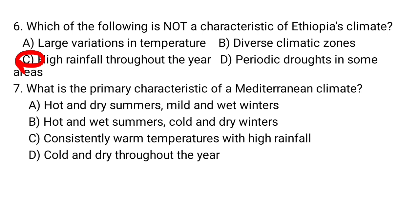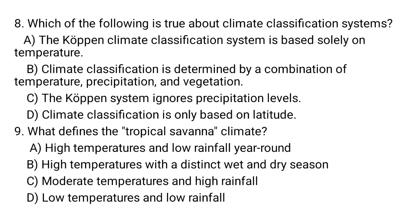Question number eight: Which of the following is true about climate classification systems? A. The Köppen climate classification system is based solely on temperature. B. Climate classification is determined by a combination of temperature, precipitation, and vegetation. C. The Köppen system ignores precipitation levels. D. Climate classification is only based on latitude.